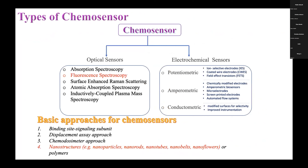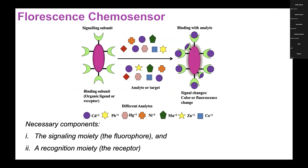The diseases shown in the figure are caused by arsenic, cadmium, and mercury. Chemo sensors are of two types: optical sensors and electrochemical sensors. My work is on fluorescence spectroscopy. The basic approaches of chemo sensors are: binding site signaling subunit, displacement assay approach, chemo dosimeter approach, and nanostructure. I am working on nanostructures, which can be nanoparticles, nanorods, nanotubes, nanobelts, or nanoflowers. The necessary components of a fluorescence chemo sensor are the signaling moiety — the fluorophore — and the recognition moiety, which is the receptor. The receptor binds the analyte from different sets such as metallic ions or molecules, and the signaling subunit works as a transducer.